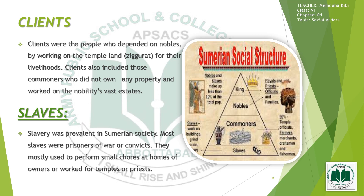The Sumerian social structure was organized as follows: at the top were kings, then nobles, then commoners, and then slaves. Kings and nobles included royals, priests, officials and their families. Commoners included temple officials, farmers, merchants, craftsmen, and fishermen. Slaves included those who worked on buildings, ground grain, and wove cloth. Nobles and slaves together made up less than 10 percent of the total population.